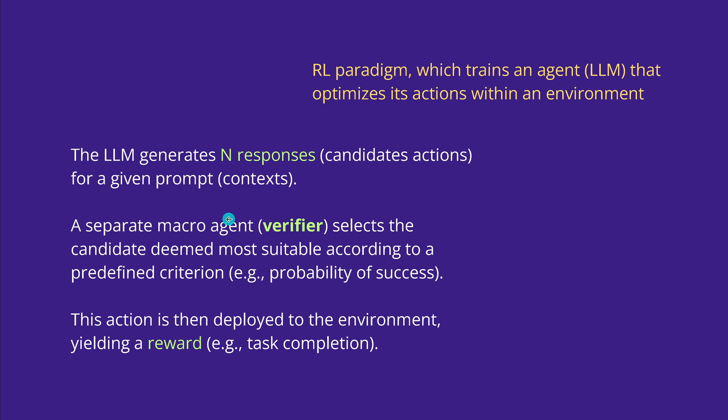A separate agent, let's call this agent a verifier, selects the candidate deemed most suitable according to predefined criterion, let's say probability of success for a particular action in a particular environment. This action is then deployed to the environment, yielding a specific environmental reward, let's say task completion, 85%, 100%. This is the very simple definition.